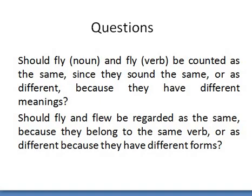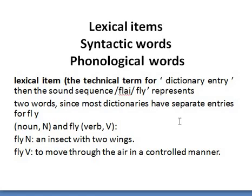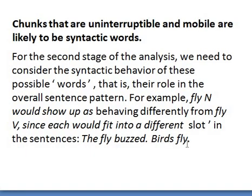In order to solve these problems, it's important to distinguish between three types of words: lexical items, syntactic words, and phonological words. A lexical item is the technical term for a dictionary entry. The sound sequence 'fly' represents two lexical items, since most dictionaries have separate entries for 'fly' as a noun — an insect with two wings — and 'fly' as a verb — to move through the air in a controlled manner.